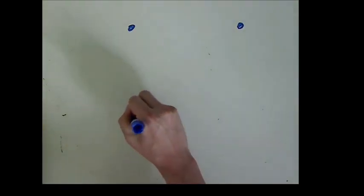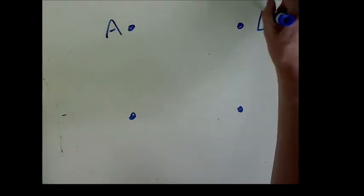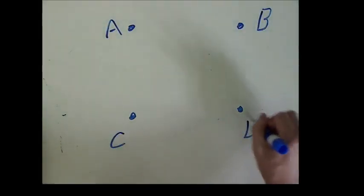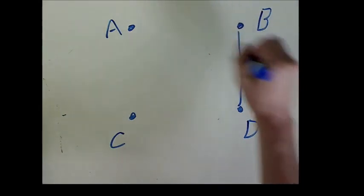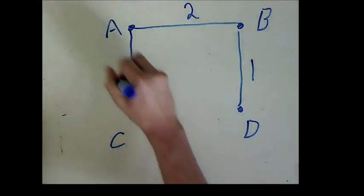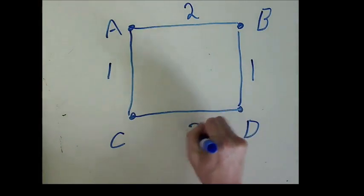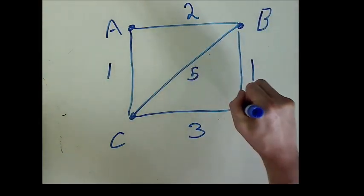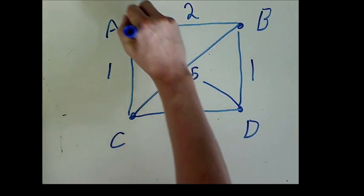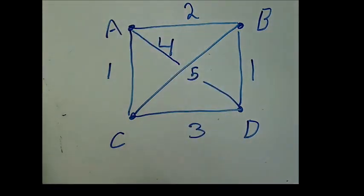One such problem is the traveling salesman problem. In this problem, we are given a group of cities and the distances between them. Then we are asked to find the shortest path which visits each city exactly once and ends at the same city at which it started.